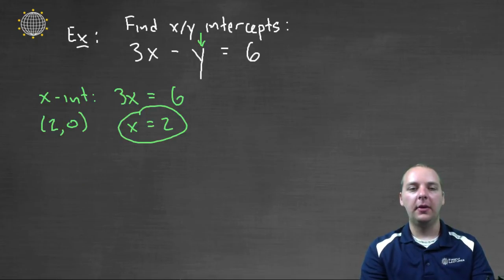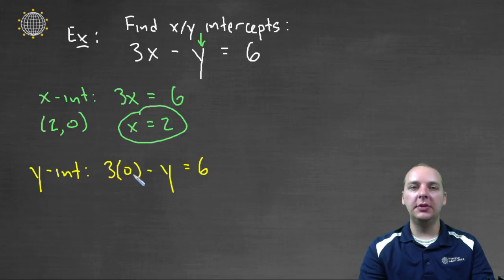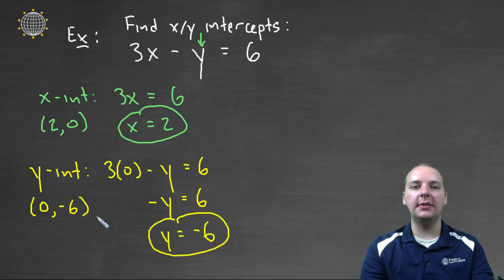It's very fast. And the Y intercept, on the other hand, was three times zero minus Y equals six. So three times zero is zero. Zero minus Y is negative Y equals six. And again, automatically we have it, Y is equal to negative six. So we'd have a Y intercept at zero comma negative six. So it's very fast to find X and Y intercepts when it's written as AX plus BY equal your constants on the opposite side.